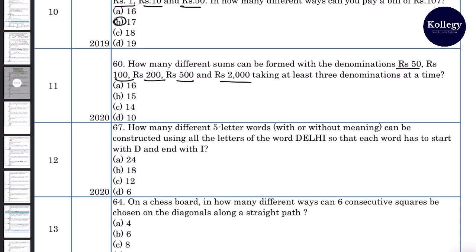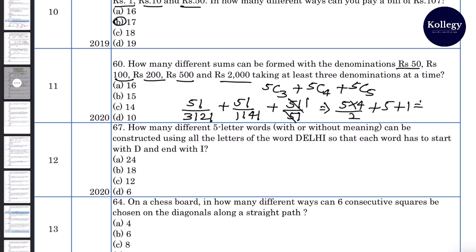How many different sums can be formed with the denominations of rupees 50, 100, 200, 500 and 2000 taking at least three denominations at a time? So how many different total sums can be made? We can do 3 to 5, 4 to 5 and 5 to 5. Why are we using combinations? Because the sum doesn't matter to order. So 5C3 is 5 factorial divided by 3 factorial 2 factorial plus 5C4 is 5 factorial divided by 1 factorial 4 factorial plus 5C5 is 5 factorial divided by 5 factorial, which means 5 into 4 divided by 2 plus 5 plus 1, total will be 16 which option will be A.